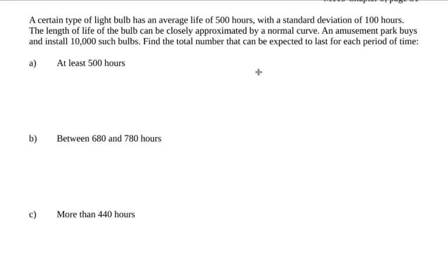So for each individual bulb, we're saying the mean is 500 hours and a standard deviation of 100. We're trying to find out an amusement park buys and installs 10,000 such bulbs, and we're trying to figure out the number of bulbs that we can expect to last at least 500 hours.